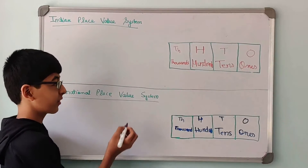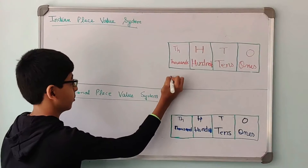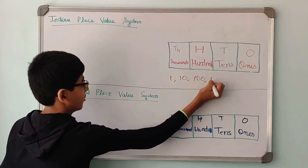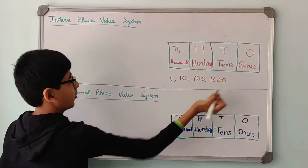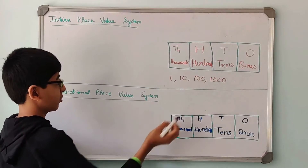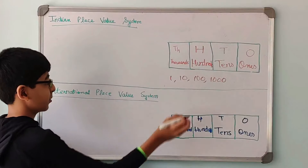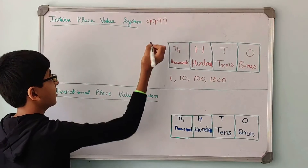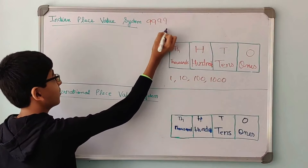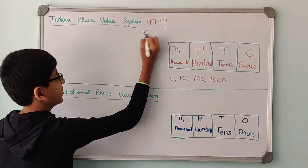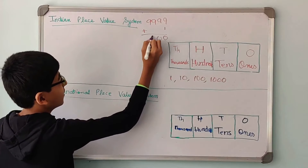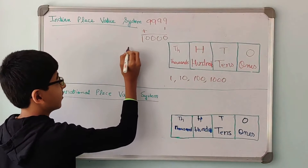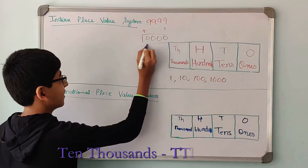The basic numbers that come in both the systems are 1, 10, 100, and 1,000. This comes common in both the systems. The highest number in the 1,000s is 9,999. And then, once we add 1 to it, we get 1 followed by 4 zeros, and this number is called 10,000.